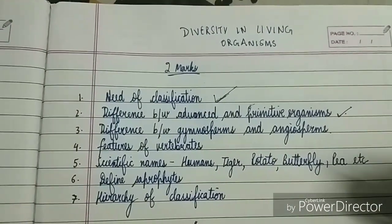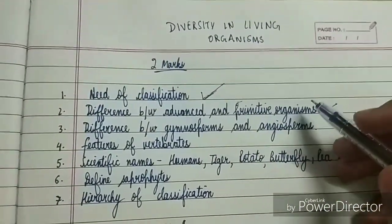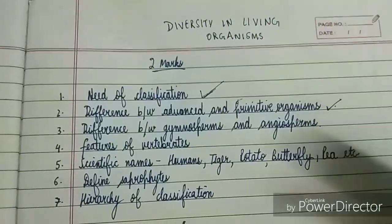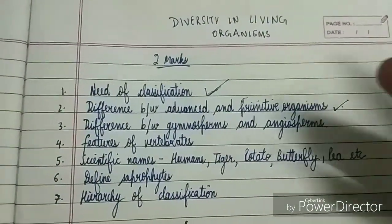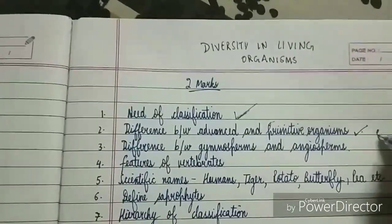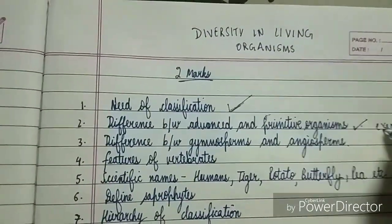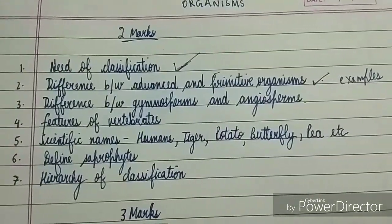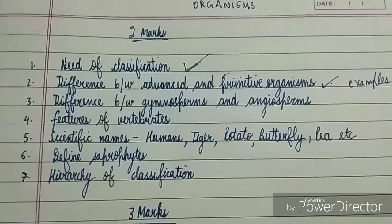The second important topic covers differences. The difference between advanced and primitive organisms is a very important question. You need to know the examples. In one-mark questions, examples can be separately asked — like what are the examples of advanced organisms and primitive organisms.